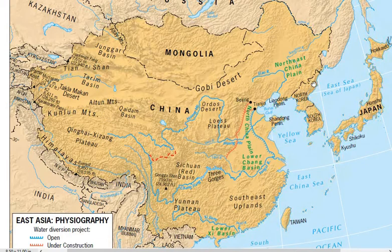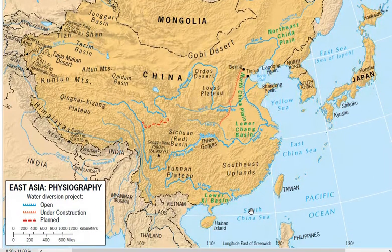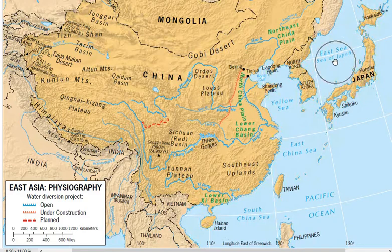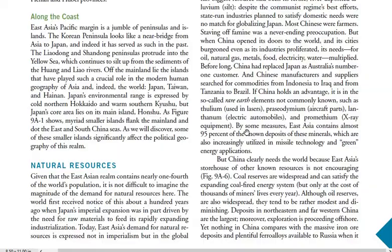The surrounding water bodies include: in the south, the South China Sea; then the East China Sea; the Yellow Sea, named because the Yellow River has its delta near it; the East Sea, also called the Sea of Japan, which separates the mainland from Japan; and the Bohai Gulf.